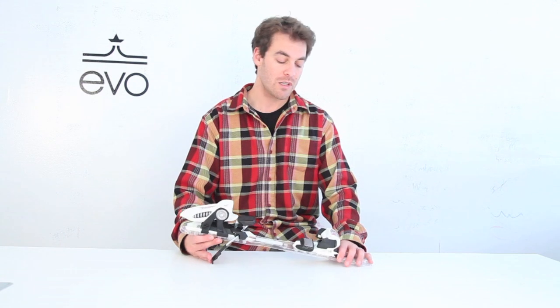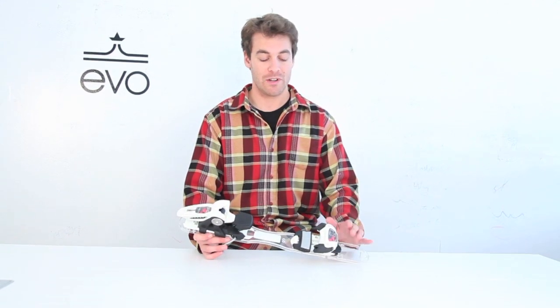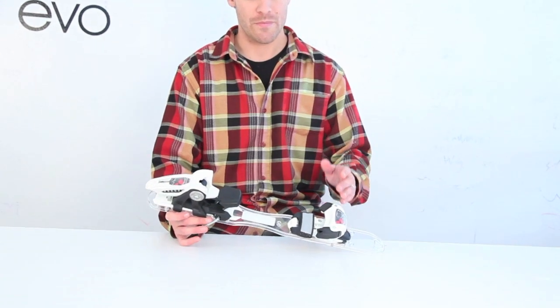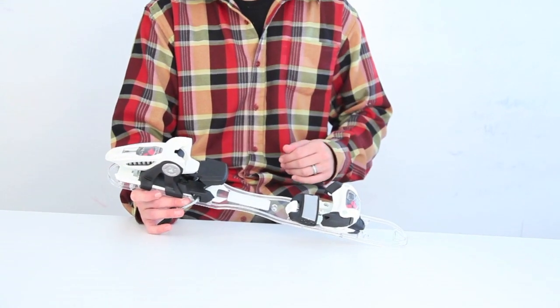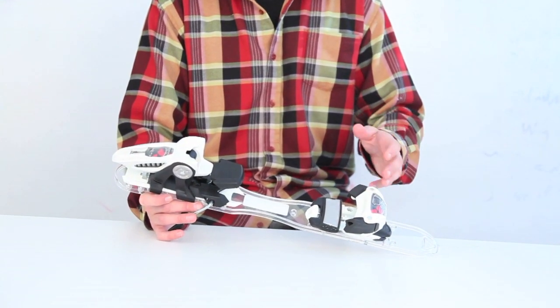It's a full composite package so it's lightweight, not quite as durable as the Jester. With the Griffin you have the triple pivot elite toe piece. You basically have a horizontal spring in here with great power transmission all the way through.